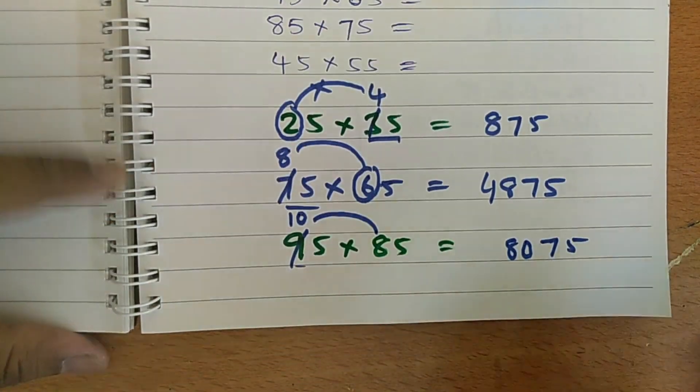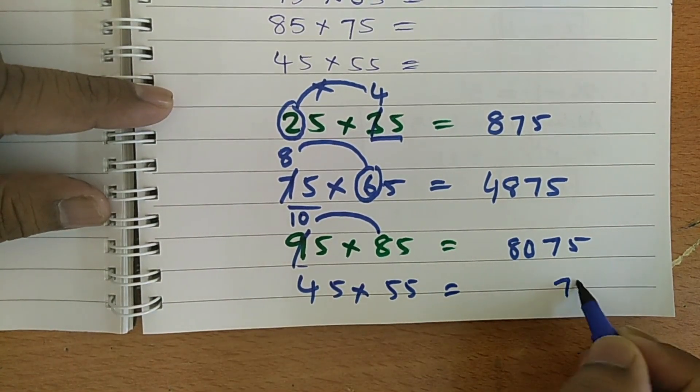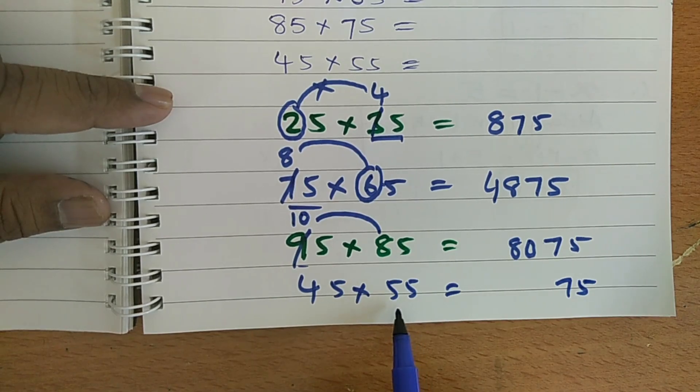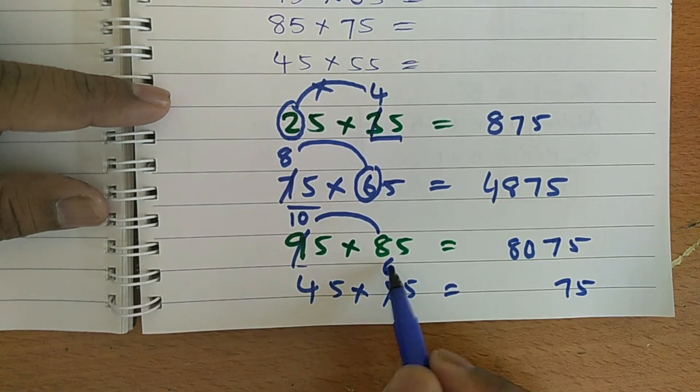If you want, you can do one more, so 45 into 55. So, directly first time, we should write here 75 at the end. So, 55 is the biggest. So, here I should increase one number here. I will increase one number here in the 10th place.